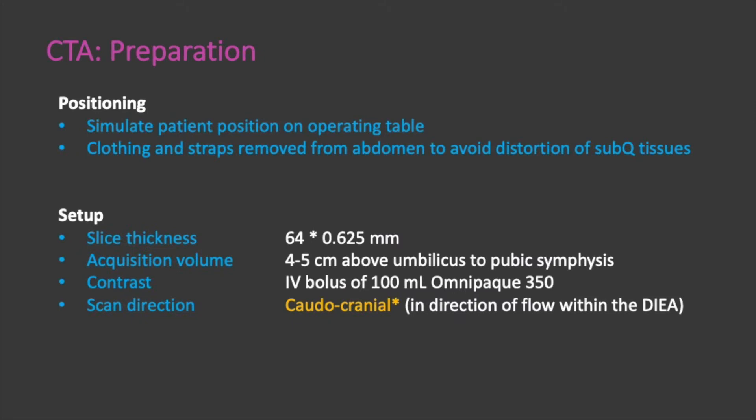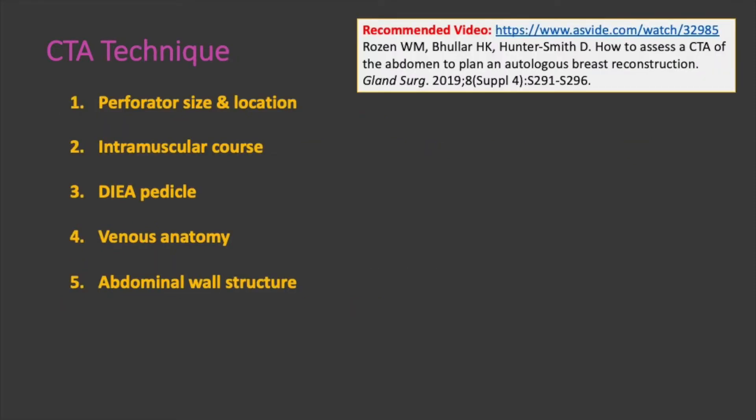For CTA preparation, the patient should be positioned in a similar way to how they will be positioned on the operating table. Any clothing and straps should be removed from the abdomen to avoid distortion of the subcutaneous tissues. The slice thickness is thin at 0.625 millimeters. The acquisition volume should be around 4 to 5 centimeters above the umbilicus down to the pubic symphysis. Patients receive an IV bolus of 100 milliliters of Omnipaque solution, and the scanning direction can be either craniocaudal or caudocranial, but studies have shown that caudocranial results in better imaging outcomes because this simulates the direction of flow within the DIEA. A 2019 publication by Rosen and colleagues provides a helpful video detailing their CTA technique.